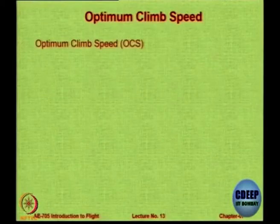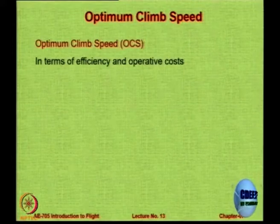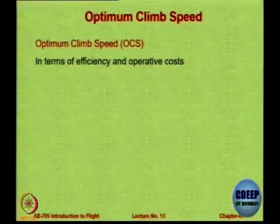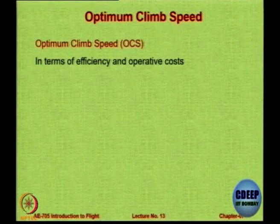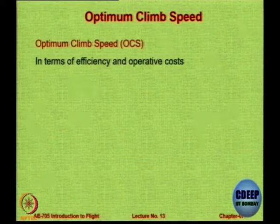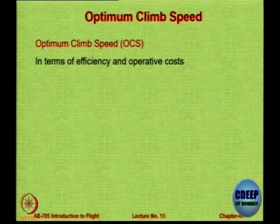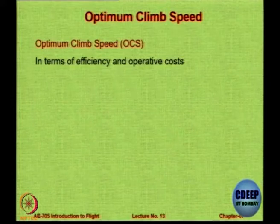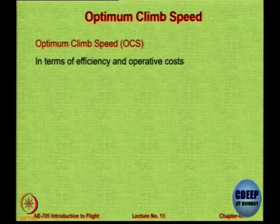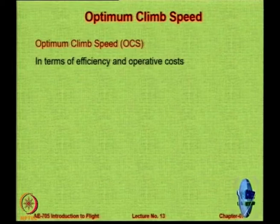There is something called optimum climb speed (OCS) — the speed at which the aircraft is actually made to climb in commercial operations. This is not driven by either Vx or Vy; it is driven by economics. A question arises about gliders: they do not have an engine, but they do have a landing gear. The landing gear was retractable type with hydraulics in the example shown. There are three ways of launching a glider: with an engine (motor glider), by tow, or by winch.